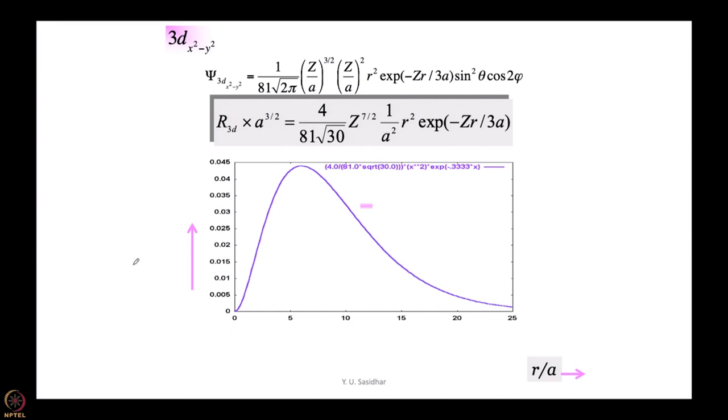With that background, let us come back and see what a plot of 3d x²-y² would look like. This is what we have: we have a constant multiplied by r² multiplied by e to the power minus zr/3a, multiplied by sin² theta cos 2φ. Let us worry about the radial part to start with. The radial part again goes through a maximum. When r equal to 0 it is 0, r equal to infinity it is again 0, and in the middle r² keeps increasing and e to the power minus zr which has a maximum value at r equal to 0 keeps decreasing, so the product of course would go through a maximum.